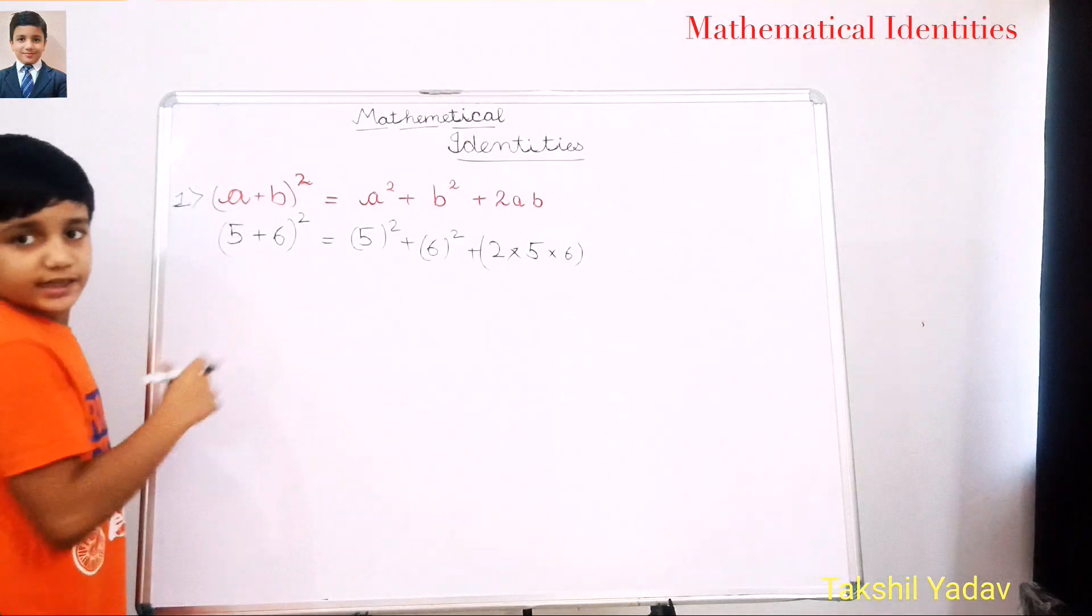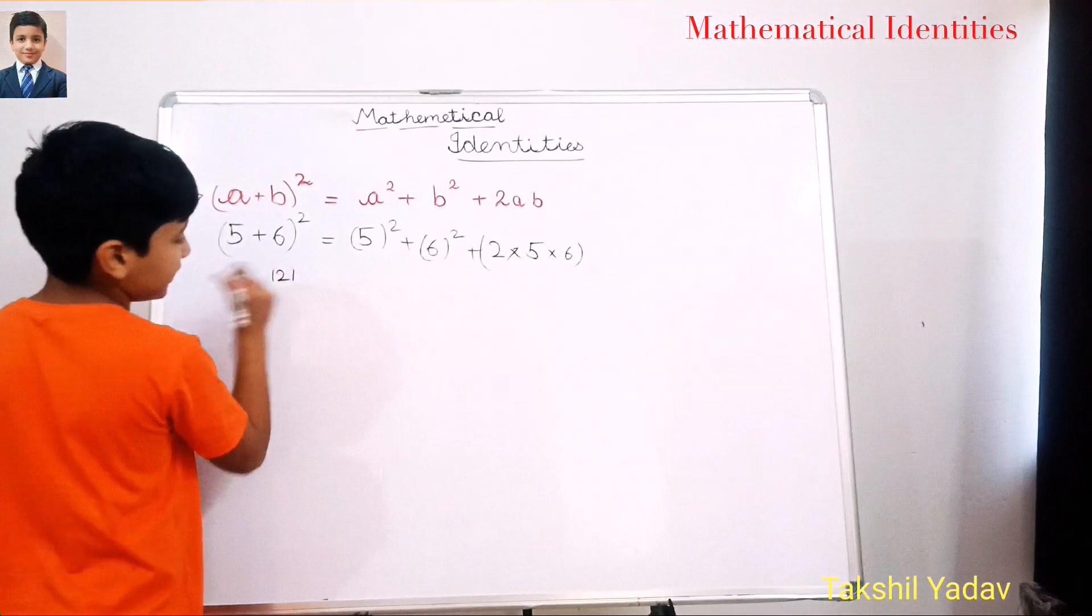Now, let's add it up. 11 square is equal to 121. So 121 on the LHS.